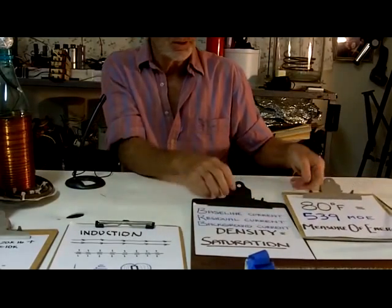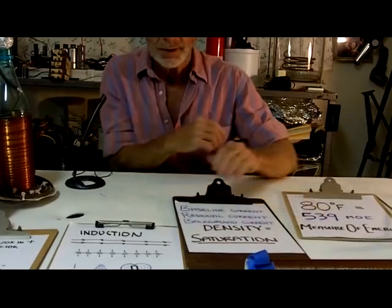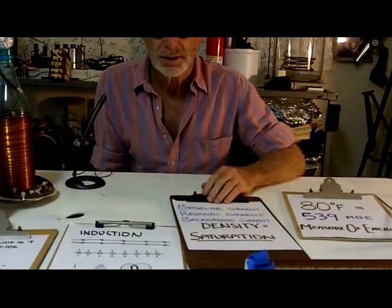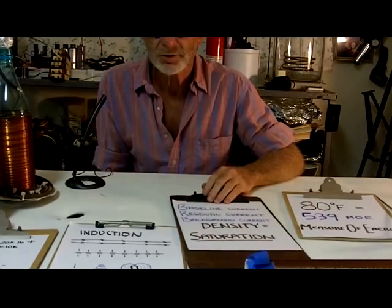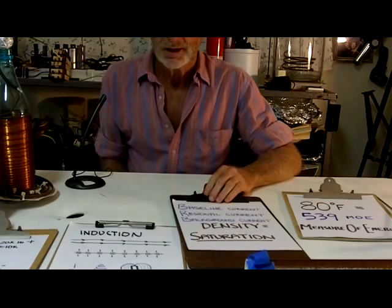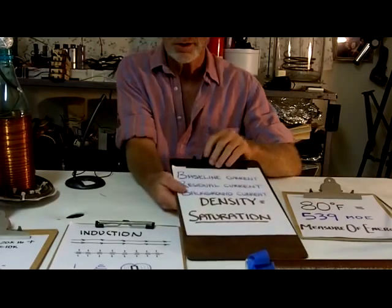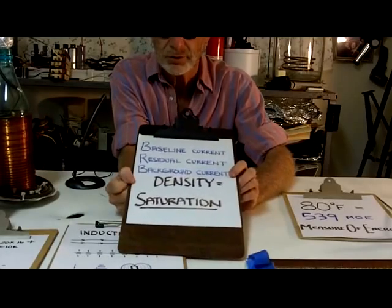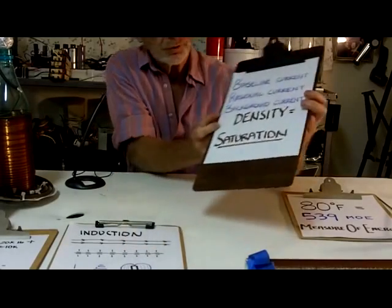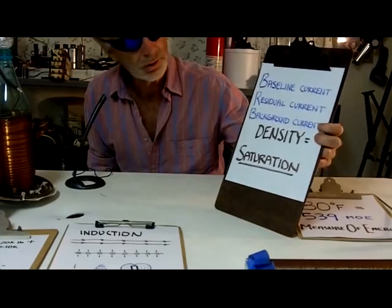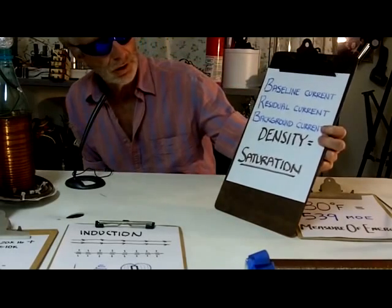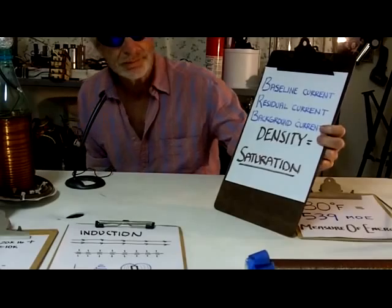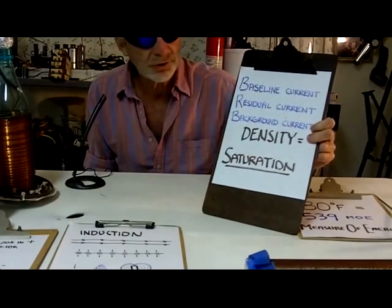Now we understand that this energy in the air, this heat, is actually a form of electricity. This is confirmed by scientific research. There's something that's referred to as baseline current or residual current or background current. The common name for this is density.